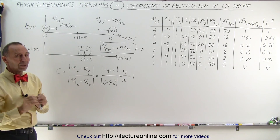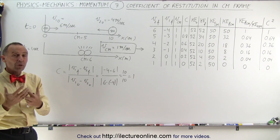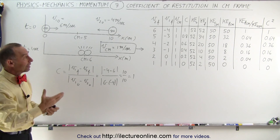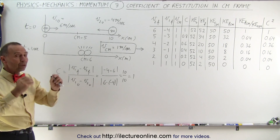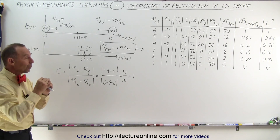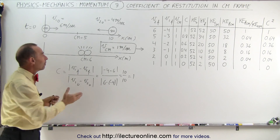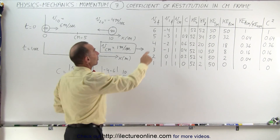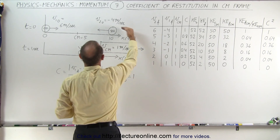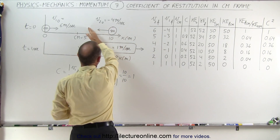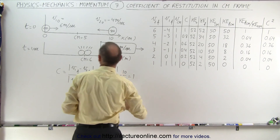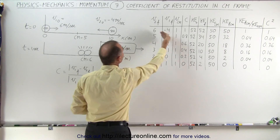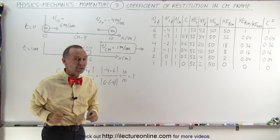Now we have a table that will help us understand the concept of the coefficient of restitution even better. When those two objects collide, what happens afterwards depends upon the elasticity of the collision. If it's perfectly elastic, the second object — which was first moving to the left at 4 m/s — will now move to the right at 6 m/s. The one on the left, which was moving to the right at 6 m/s, will after the collision move to the left at minus 4 m/s.